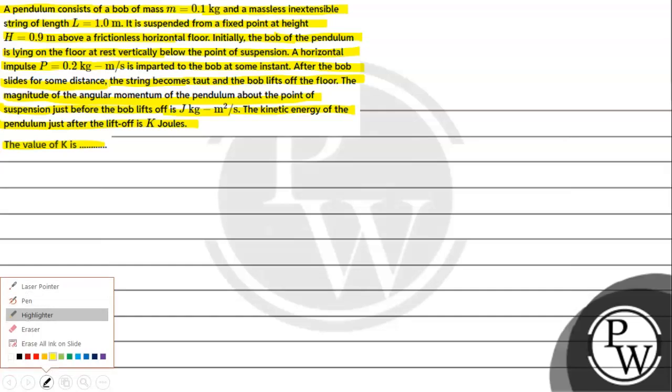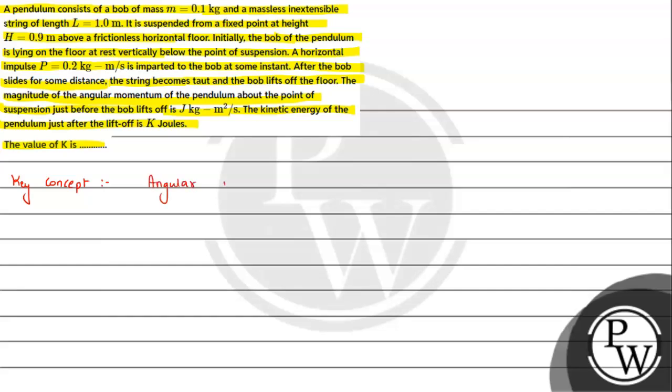For this question, the key concept we need to understand is the concept of angular momentum. Basically, we know that angular momentum we measure from a point. And the expression we have for a case of translational motion, we write the formula MVR. The magnitude. Otherwise it is M R cross V.